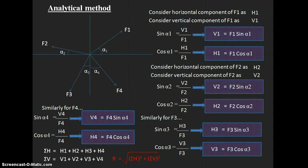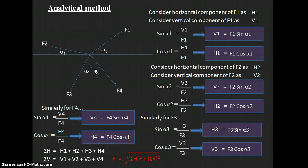We can also find the angle θ — the angle at which the resultant force acts with the horizontal line. This is determined by: tan(θ) = ΣV/ΣH, so θ = tan⁻¹(ΣV/ΣH). This gives the angle of inclination of the resultant force. This completes the analytical method for finding the resultant of coplanar concurrent forces.